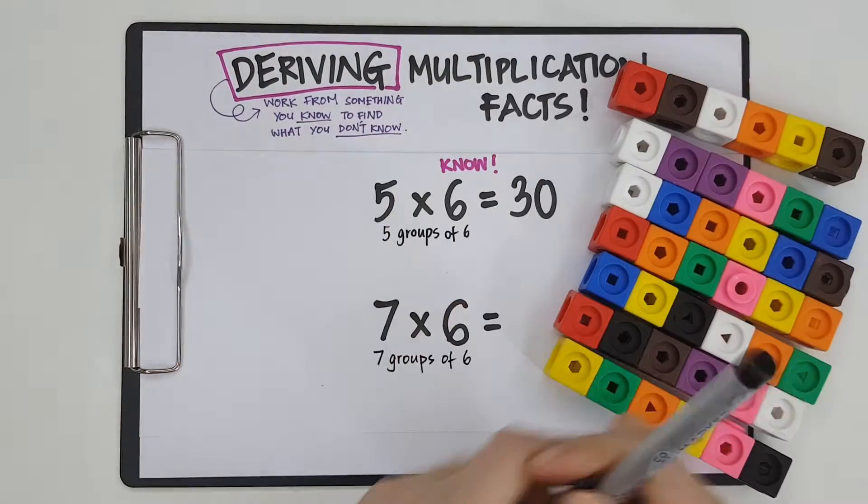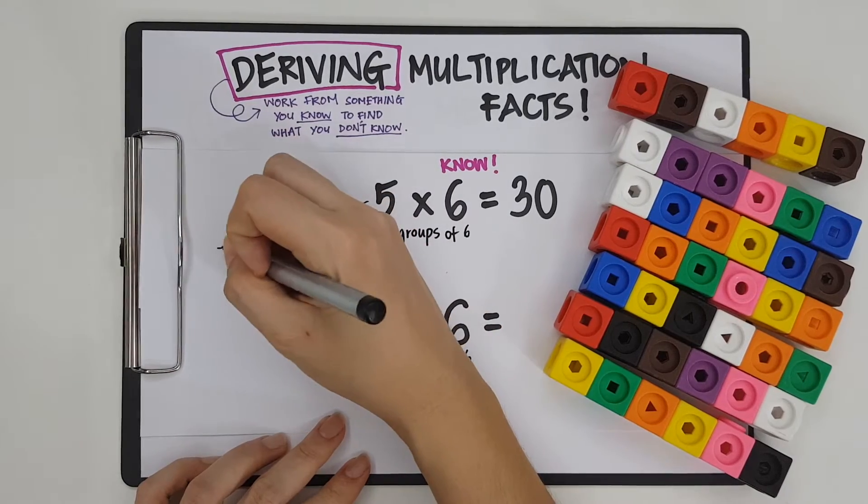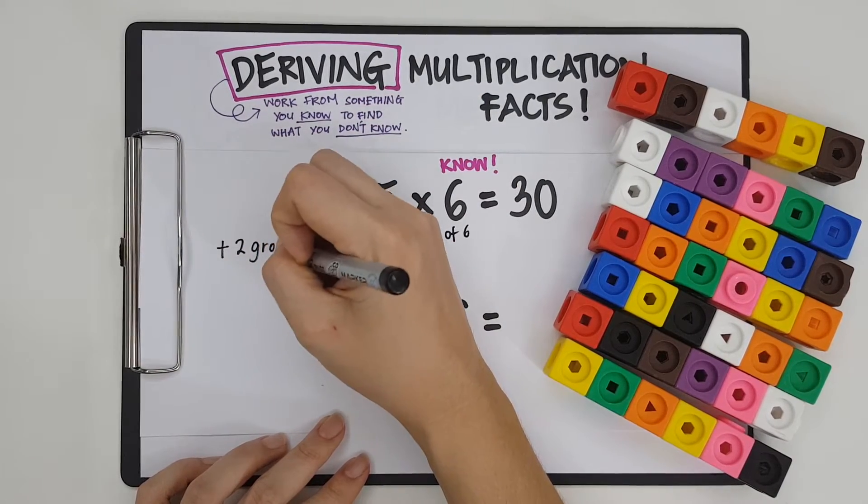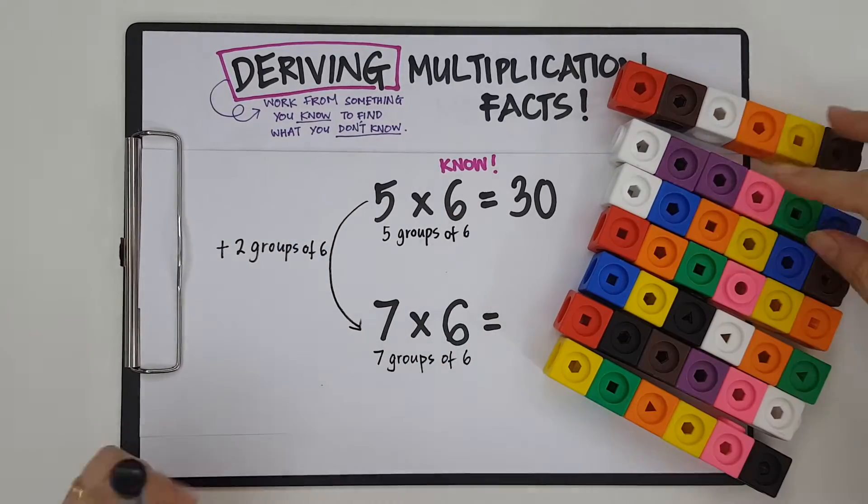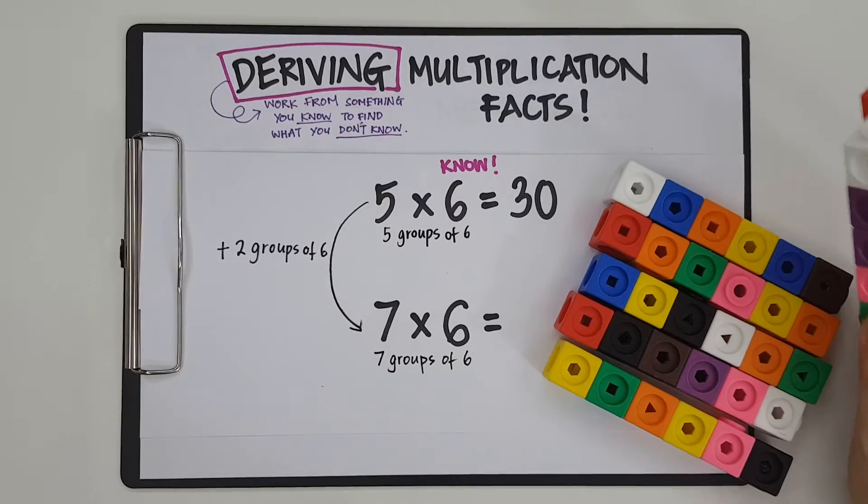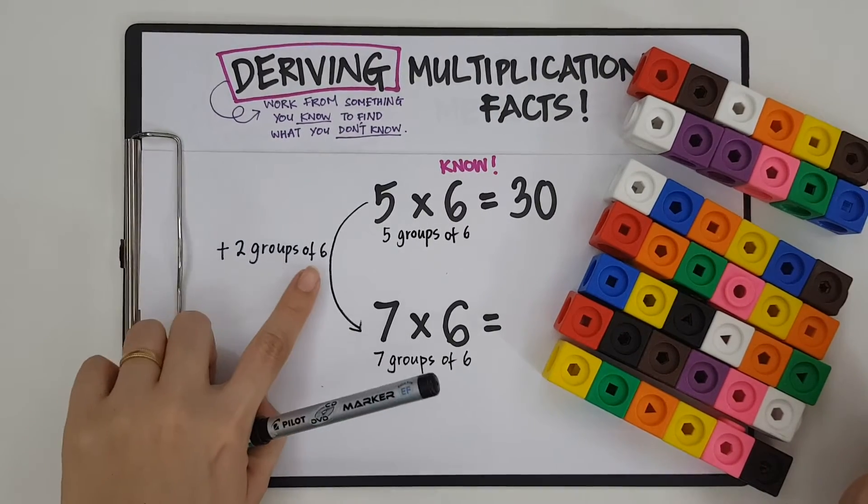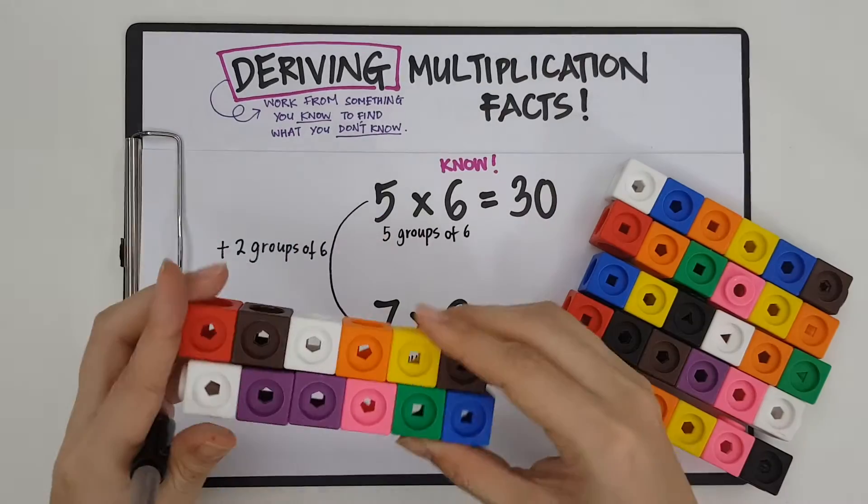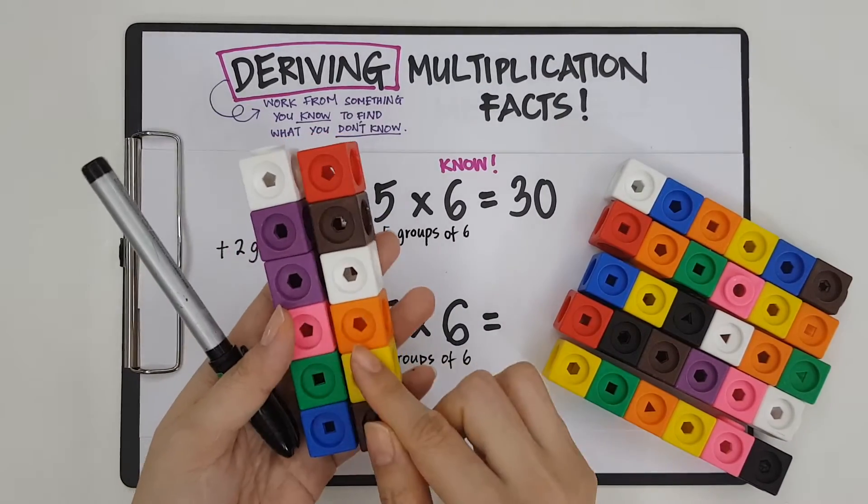If I want 7 groups, I need to add plus 2 groups of 6. Okay? 5 groups to 7 groups. I need to add another 2 more groups of 6. Now, 2 groups of 6. How many is in there? 2 groups of 6 means I need to add 12.